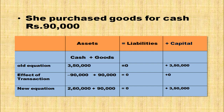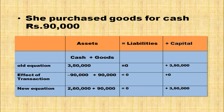She purchased goods for cash rupees 90,000. In the asset side, open one more column for goods and add 90,000. When goods are purchased, cash is going from the business, so deduct 90,000 from the cash column. Cash balance becomes 2,60,000 plus goods worth 90,000 — asset side value is 3,50,000. Liabilities plus capital side also 3,50,000. Accounting equation is satisfied.